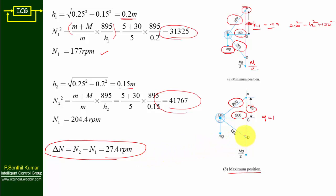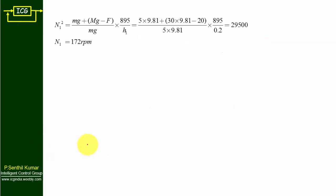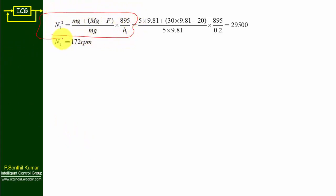In the Porter governor, the dead weight slides along the vertical axis creating friction. Without friction we found n1, n2, and delta-n — that is the answer for subdivision 1. For subdivision 2, h1 and h2 remain the same, no need to recalculate them. The formula considering friction is: n1² = [(mg + Mg − F) / mg] × (895 / h1). This has been derived in the Porter governor derivation lecture.